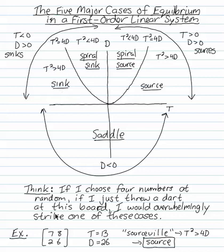That covers almost every piece of the plane. If you just chose four numbers at random — if you threw a dart at this board — what are the odds you would strike the parabola or the two axes lines? Very slim. So you're going to hit one of these five cases most likely.